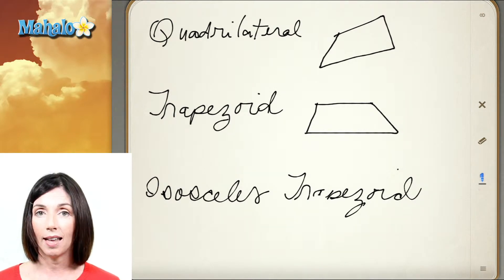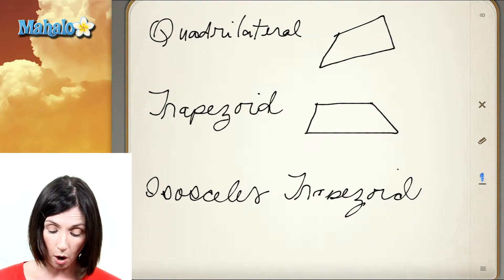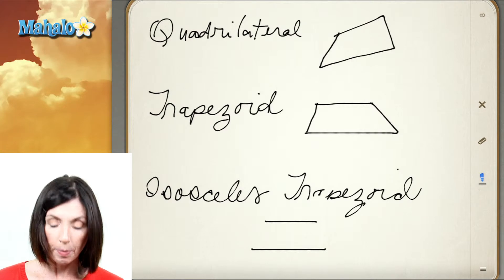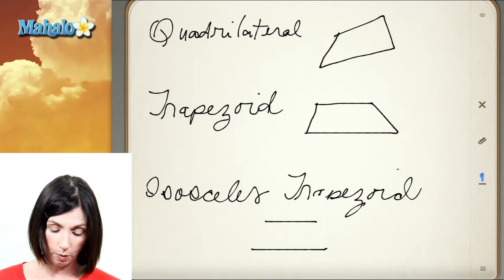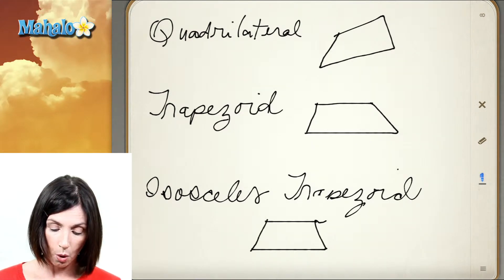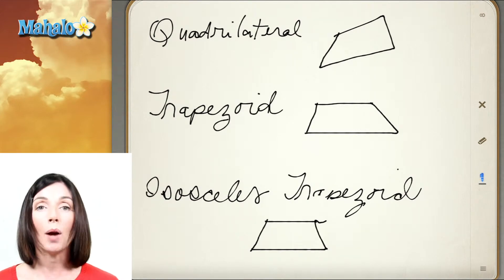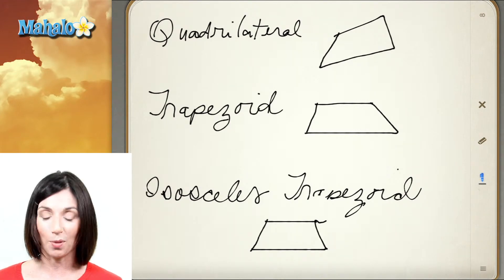An isosceles trapezoid also has one pair of parallel lines, but the other two sides are equal to each other — this side and this side would be the same length. That would make it an isosceles trapezoid.